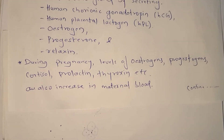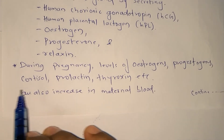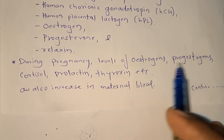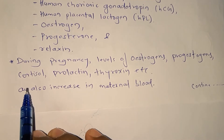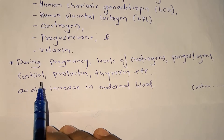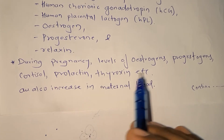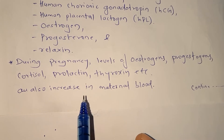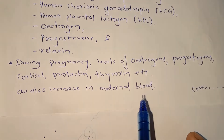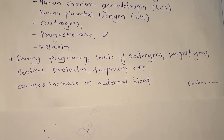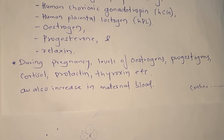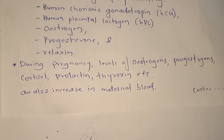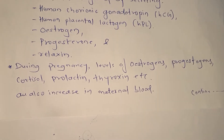During pregnancy, the levels of estrogen, progesterone, cholesterol, cortisol, prolactin, and thyroxin also increase in the maternal body. प्रेगनेंसी के समय माँ के शरीर में ये सारे hormones का level ज्यादा हो जाता है।